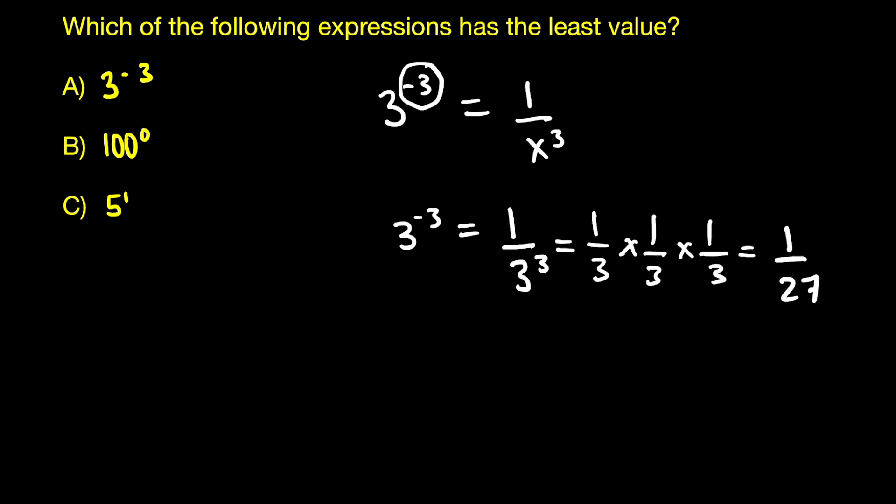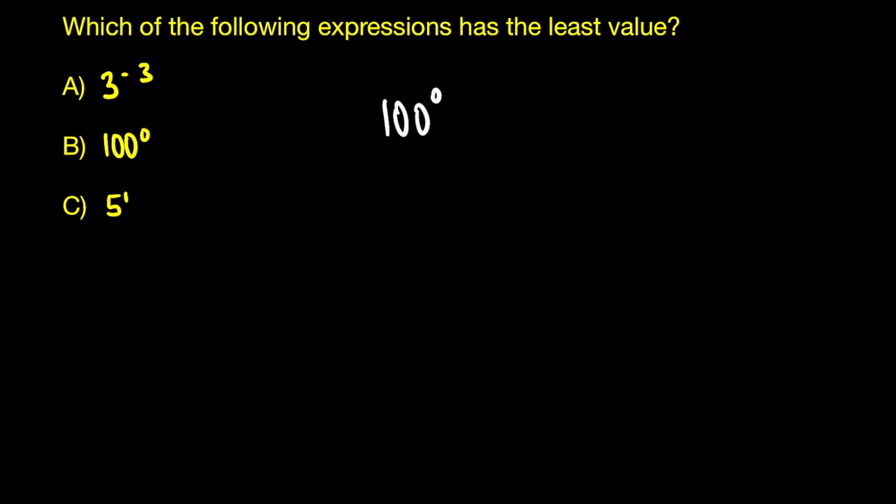If we now move on to the second one, option B, which is 100 to the power of 0, this is actually a rule that you have to know. Whenever you have a number raised to the power of 0, regardless of what that number is, the answer is going to be 1. So 100 raised to the power of 0 is 1.